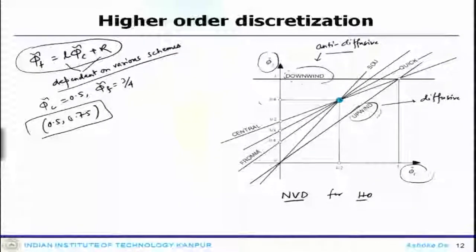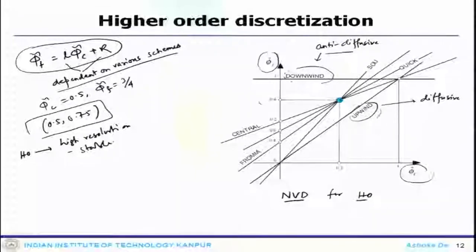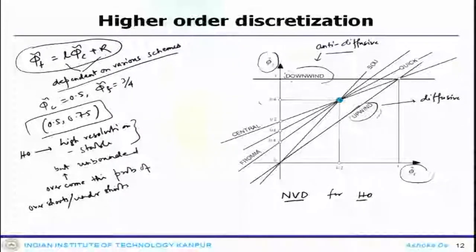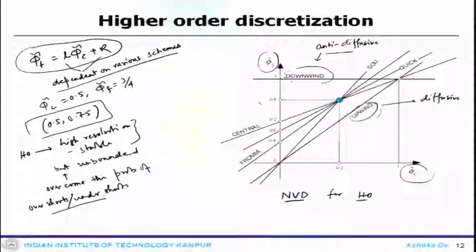Any scheme close to the upwind scheme in NVD would be diffusive, and any scheme close to the downwind scheme can be termed anti-diffusive. Any scheme passing through this point will have at least second order accuracy, and if it also passes through 0.75 it will be third order accurate. These higher order schemes have high resolution but they can become unbounded, and we need to overcome this problem of overshoots which are essentially oscillations near the gradient. That gives the platform for devising high resolution schemes.